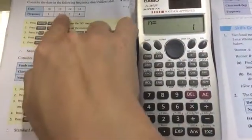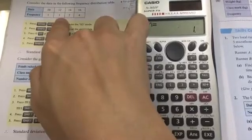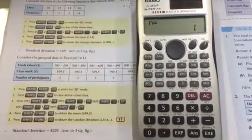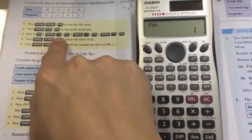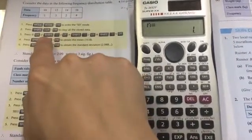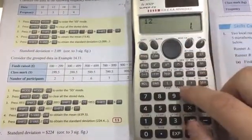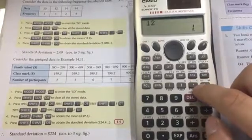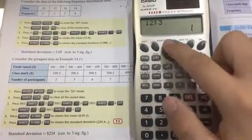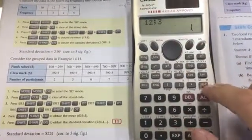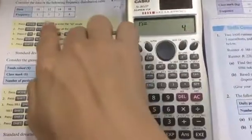The second set of data is 12 and the frequency is 3. For mathematics it is 12 times 3, but in the calculator we use colon. Input 12, Shift, and colon is right here. Then 3, that means 12 times 3, and then M+. So there are totally 4 data because 1 data and 3 data is 4 data.